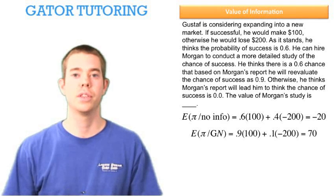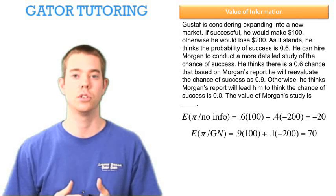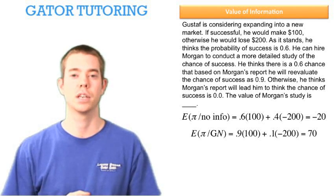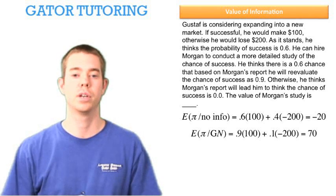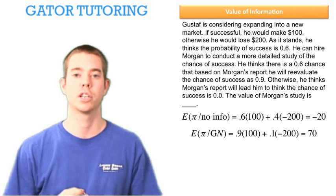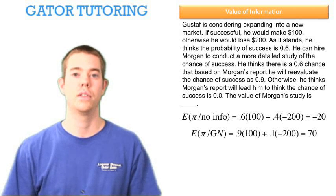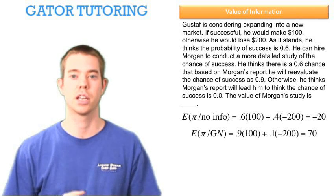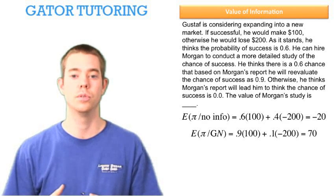The expected profit with information is broken down into two parts: the expected profit given good news and the expected profit given bad news. Given good news, he'll think the chances of success are 90%, so that's multiplied by $100. There's a 10% chance of failure, multiplied by negative $200. The expected profit given good news is $70.